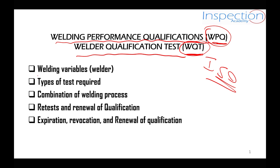We will talk about something called welding variables. When we say welding variables, we mean the variables for welders — similar to the welding variables in the WPS and PQR, we have some essential variables that if changed will require requalification. In today's session, we will talk about welding variables for welders. We will also talk about the type of test required, so if we are testing a welder, we will know how to test the joint either by using NDT or by using destructive tests.